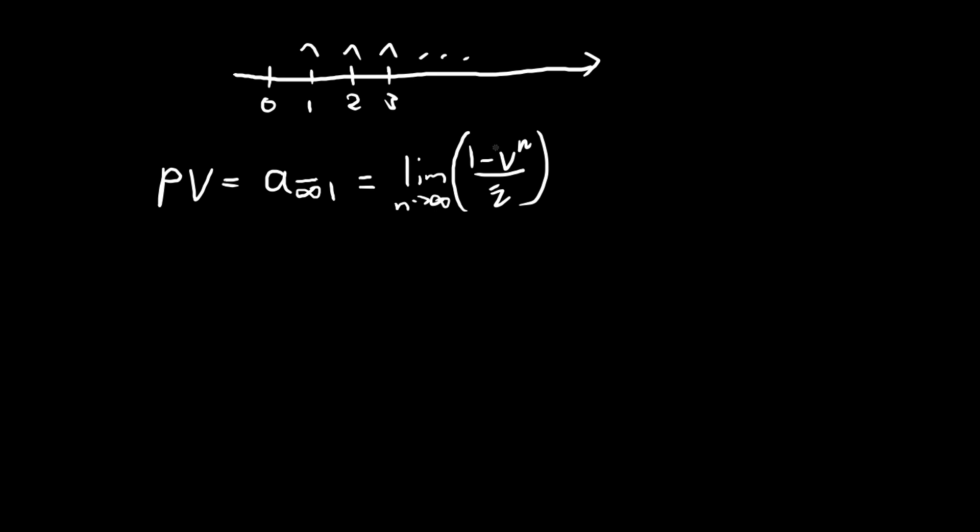Notice that as n tends to infinity, v to the power of n tends to 0 because v is equal to 1 over 1 plus i. 1 plus i is larger than 1, right? So v is some value between 0 and 1. And if you raise something that's between 0 and 1 to the power of infinity you get 0.